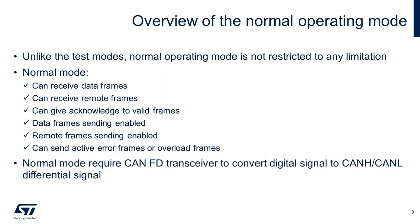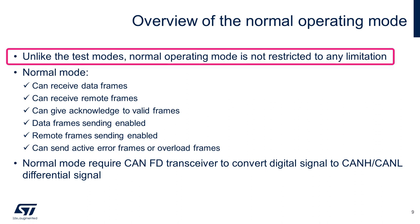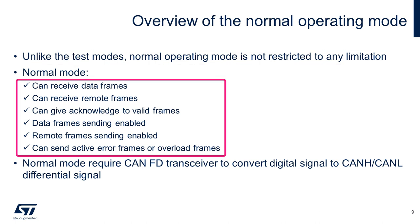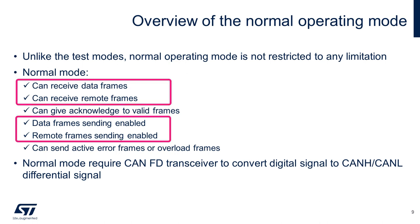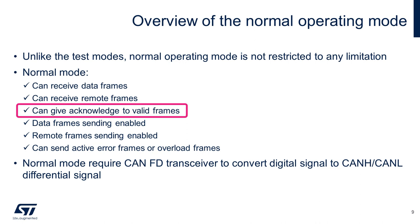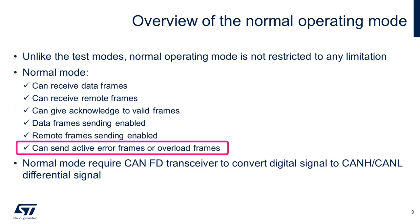We will now do a quick overview of normal operation mode of the FD-CAN peripheral. Unlike test modes, normal operation mode has no restrictions. We will use it to have two STM32-H7s communicate with each other through CAN-FD protocol. In normal operating mode, we can receive and send both data and remote frames, give acknowledgment to valid frames from other nodes, and send both active error frames and overload frames. Refer to application note 5348 or the reference manual for more details.